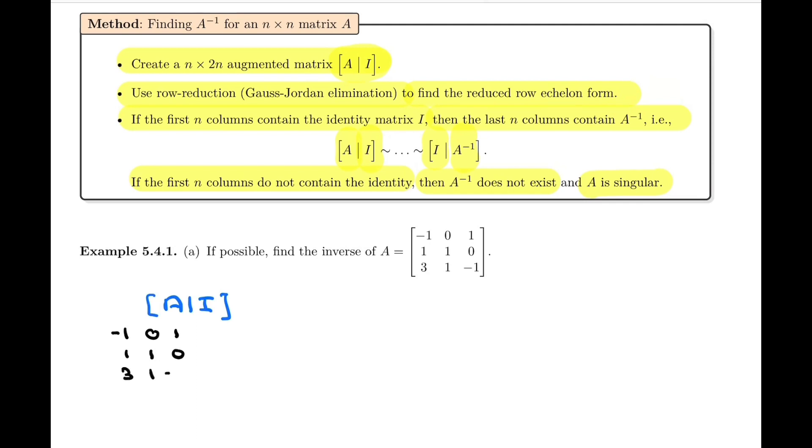All we mean by this matrix is simply to recopy A: 1, 0, 1, 1, 1, 0, 3, 1, minus 1. And right next to it, I'm going to copy the 3 by 3 identity matrix. This will become a 3 by 6 matrix. We can put a vertical line here - it's optional, but it's a good idea. We're going to proceed to use row reduction to reduce this matrix to RREF.